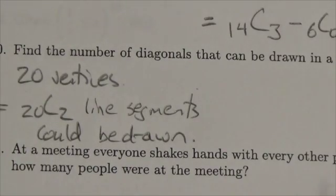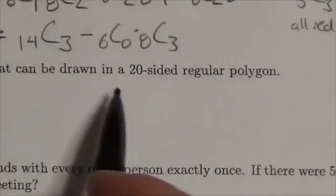Now how many of those line segments will there be? Well, if there's 20 vertices, or in this case it's 20-sided,